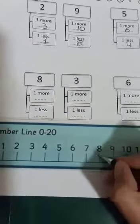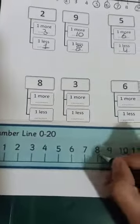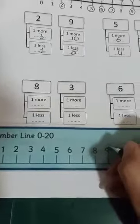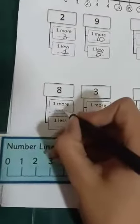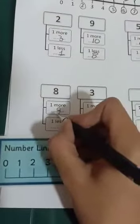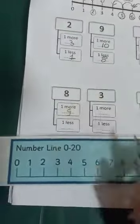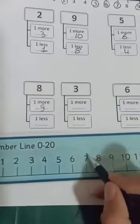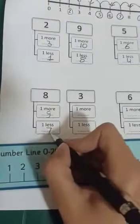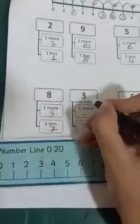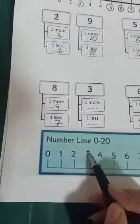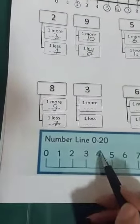One more than eight, so I will move one forward — it will be nine. One less than eight, so I would move one backward — it will be seven. Three, three — where is three? Here. One more than three, I will move one forward — it will be four.